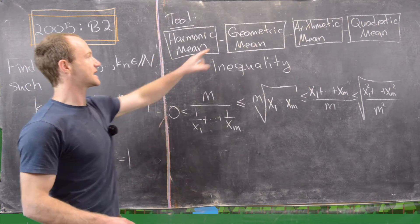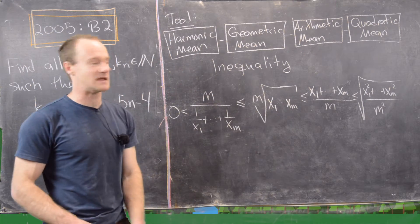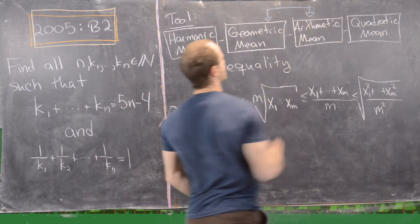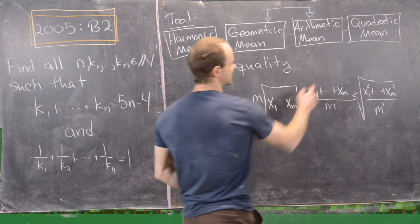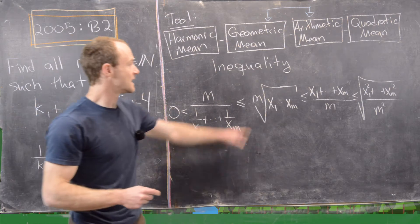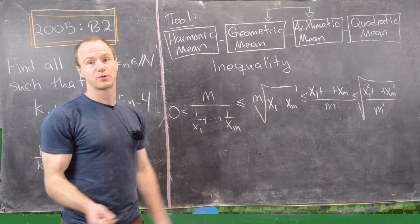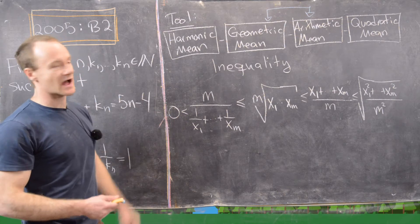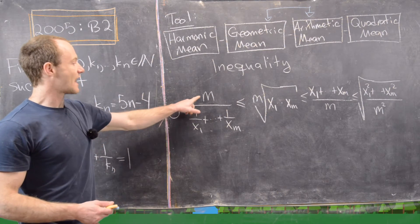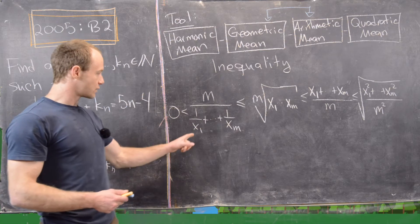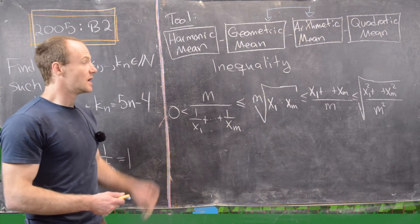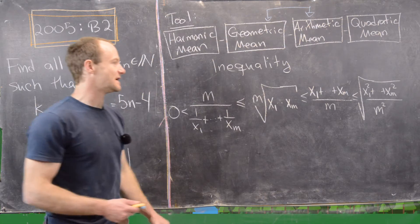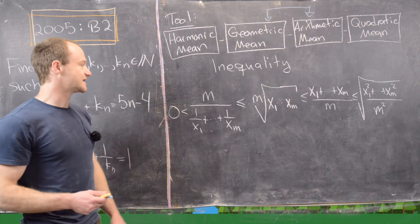That inequality is called the harmonic-geometric-arithmetic-quadratic mean inequality. You've probably heard of the geometric-arithmetic mean inequality. The arithmetic mean is the one you learn in elementary school, and the geometric mean I've proved in a previous video on Lagrange multipliers. There's also the harmonic mean: if you've got numbers x₁ through xₘ, it equals m divided by (1/x₁ + ... + 1/xₘ).